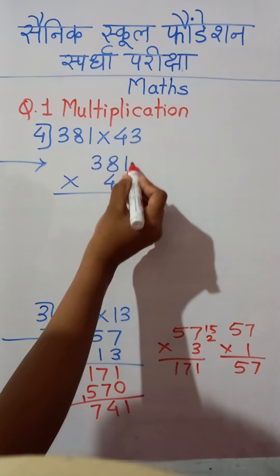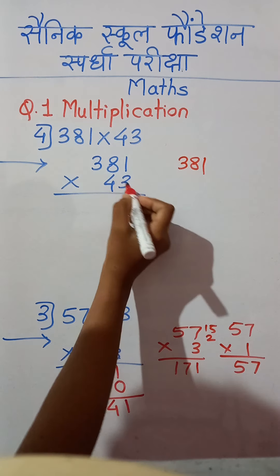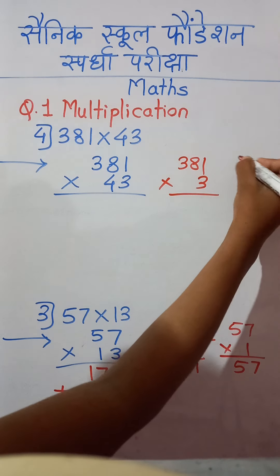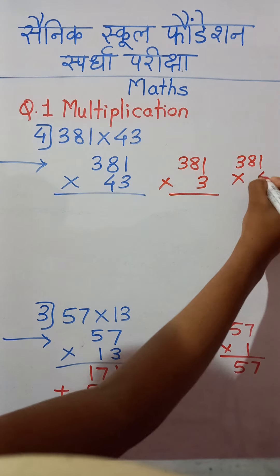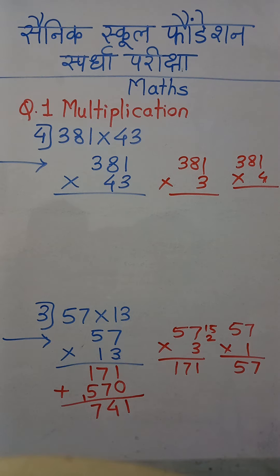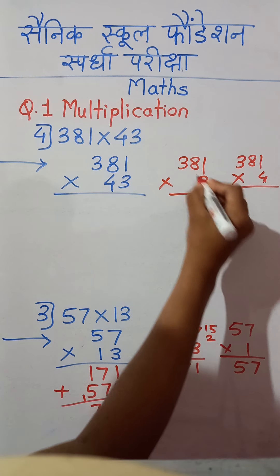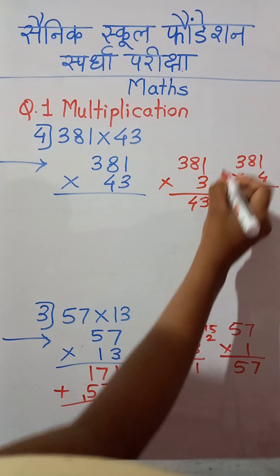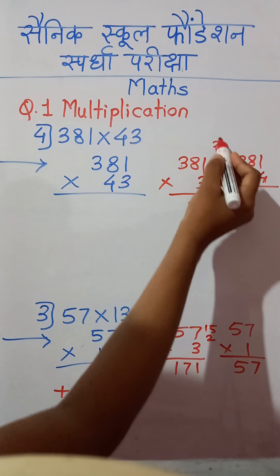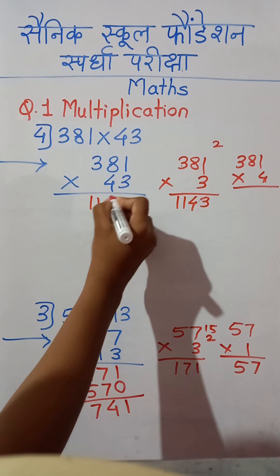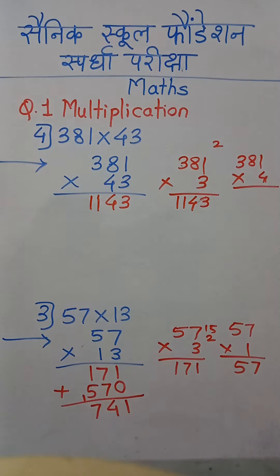We will multiply the complete number 381 by units place digit 3, then again by tens place digit 4. For 381 multiplied by 3: 3 ones are 3, write 3; 3 eights are 24, write 4 carry 2; 3 threes are 9 plus carry 2 is 11. So we get 1143. We write this answer directly here, but this is not our final answer.